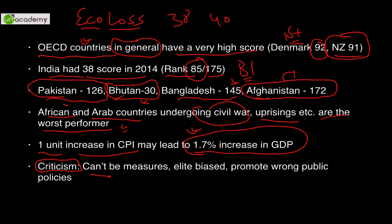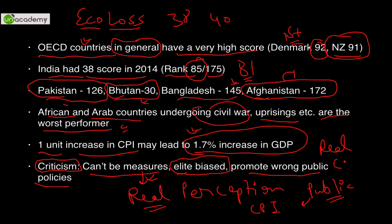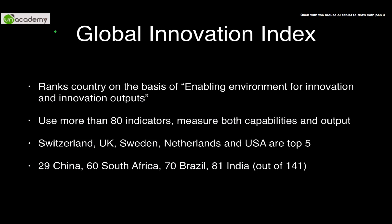Criticism of CPI: it cannot measure real corruption — it is just perception. It is also focused on elite countries and can promote wrong public policies. For example, if a government treats the CPI score itself as the target, rather than addressing actual corruption, they end up in a 'war mode' against the CPI score, wanting to increase the number rather than genuinely decreasing corruption. This is an important distinction.